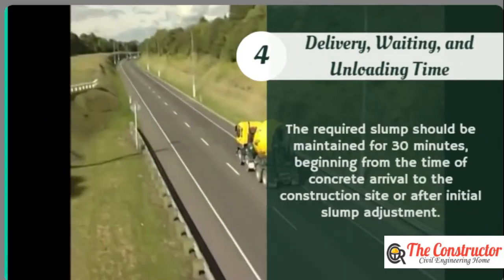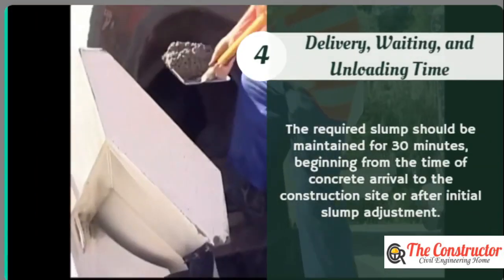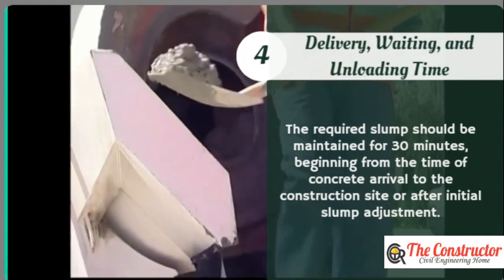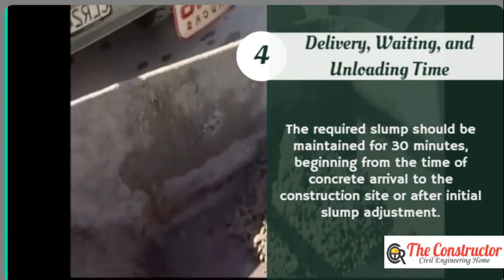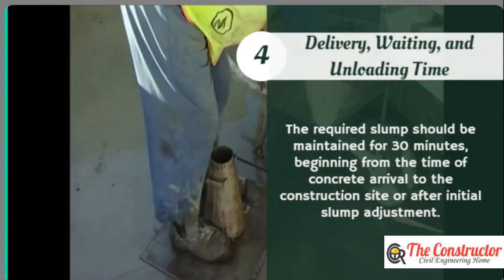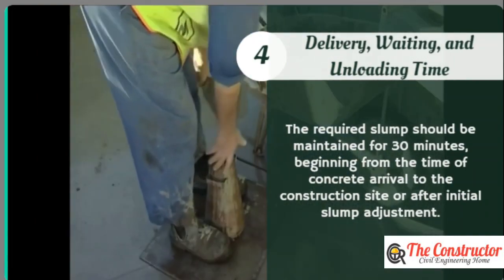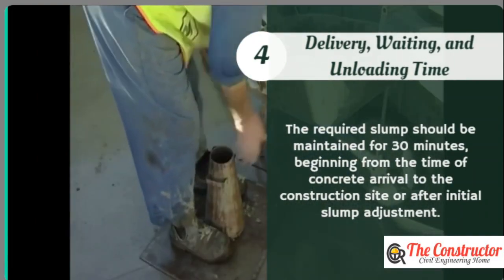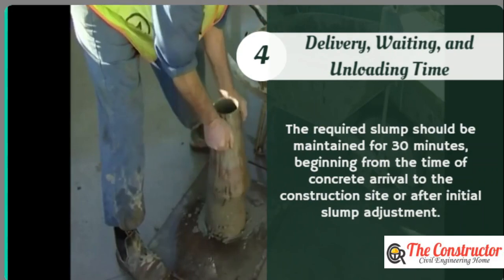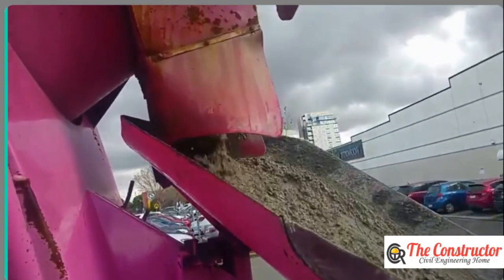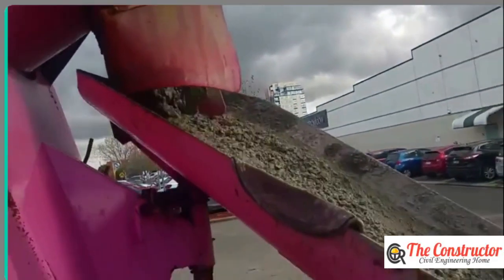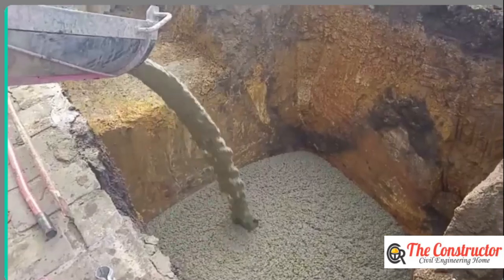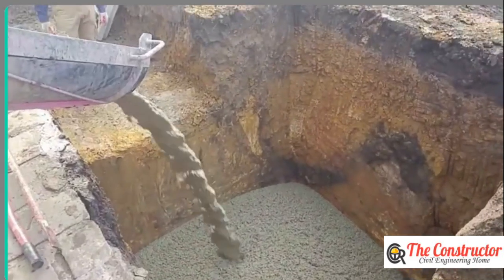The required slump should be maintained for 30 minutes, beginning from the time of concrete arrival to the construction site or after initial slump adjustment. The contractor would be held accountable if the concrete slump is reduced due to prolonged delivery, waiting, and unloading.